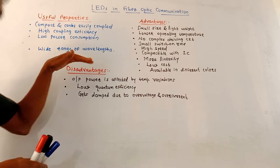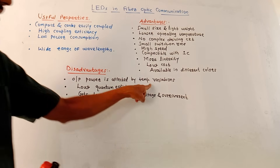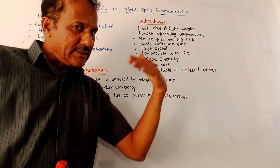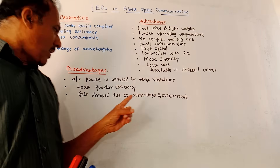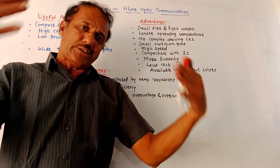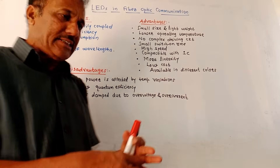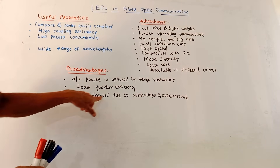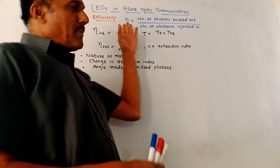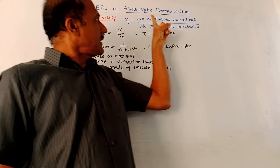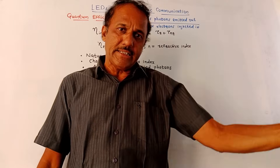Disadvantages of LED: output power is affected by temperature variation — that means this device is temperature sensitive. Quantum efficiency is low. Quantum efficiency is the ratio of the number of photons emitted to the number of electrons injected inside the LED. It also gets damaged due to over voltage and over current.